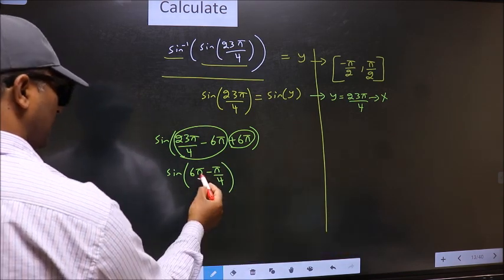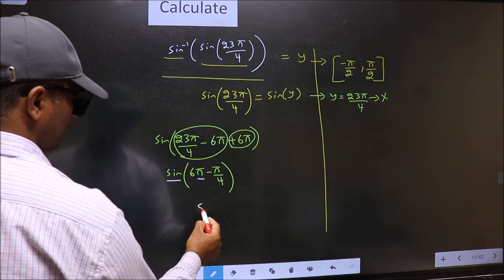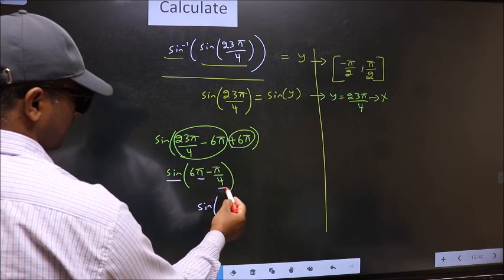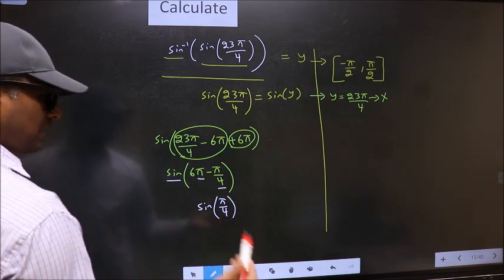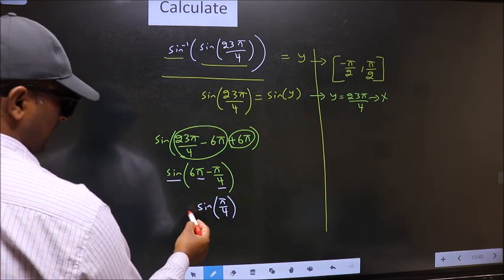Next. Here we have pi. So sin is not going to change. It will remain sin. And inside we get this angle pi by 4. Now the question is will we get here plus or minus?